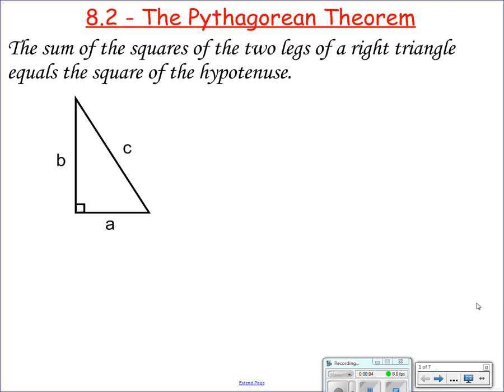The Pythagorean Theorem. The Pythagorean Theorem is something that I would almost expect you guys to already know. The sum of the squares of the legs of a right triangle equals the square of the hypotenuse.